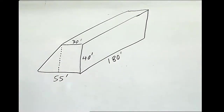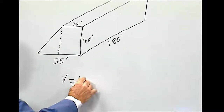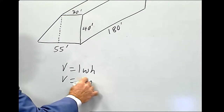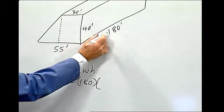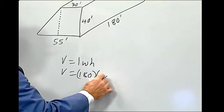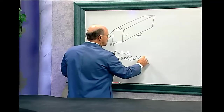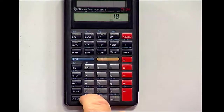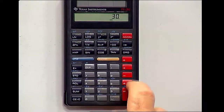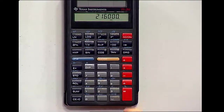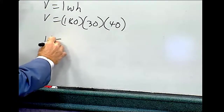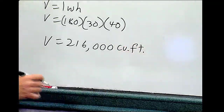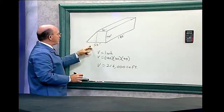Let's first find the volume of the rectangle. That equals length times width times height. The length is 180, times the width which is 30 feet, times the height which is 40. Going to the calculator: 180 times 30 times 40. The volume is 216,000 cubic feet of air in the rectangular section.